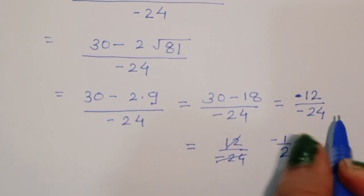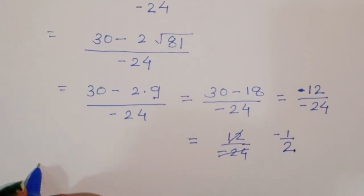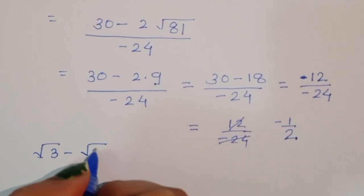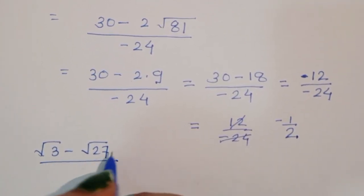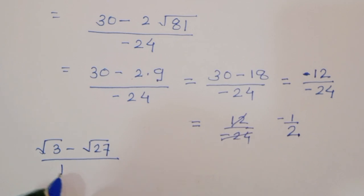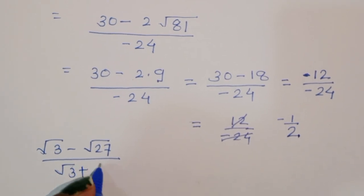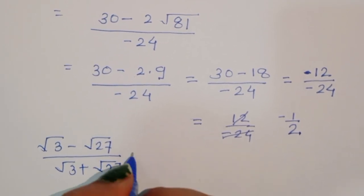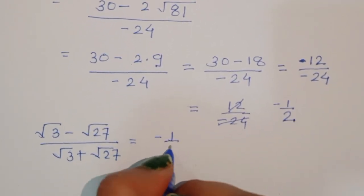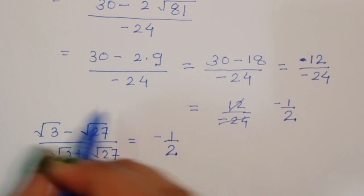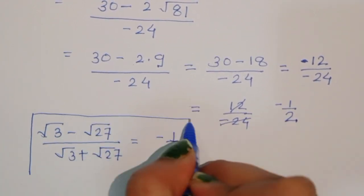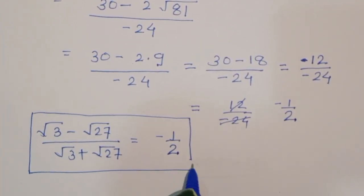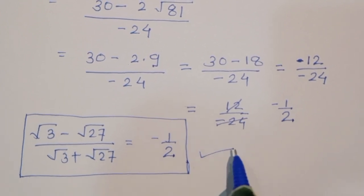So 12 divided by negative 24 simplifies to negative 1 by 2. Therefore, square root of 3 minus square root of 27, divided by square root of 3 plus square root of 27, is equal to minus 1 by 2. This is the solution by the second method. Thank you so much.